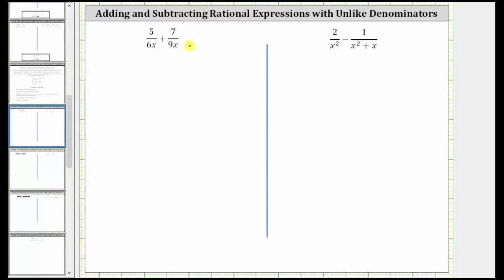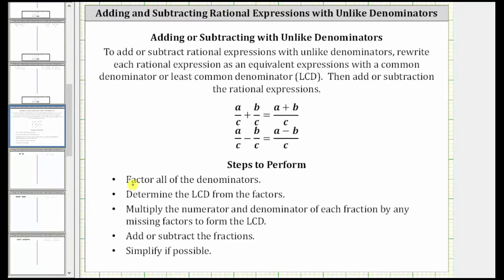We are asked to add or subtract the given rational expressions. Notice for both examples we have unlike denominators. Therefore the first step is to determine a common denominator, hopefully the least common denominator. To do this we will first factor the denominators, then determine the LCD from the factors, then multiply the numerator and denominator of each fraction by any missing factors to form the LCD, then add or subtract the fractions and simplify if possible.